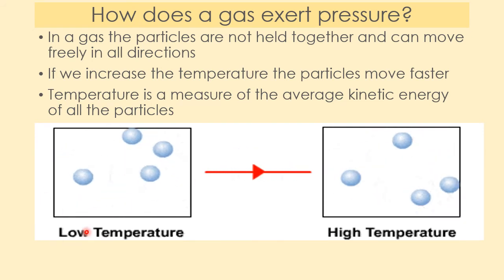We can see here we've got two gases. One at a low temperature over here - we can see the particles are moving quite slowly. They're all still moving, they're not joined, but they are moving quite slowly. Over here we have a high temperature. We can see that the particles are moving a lot faster. They're moving faster because they've got more kinetic energy.